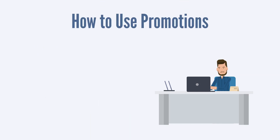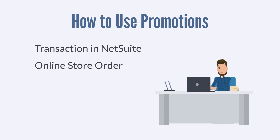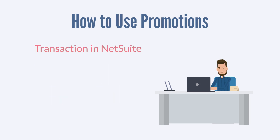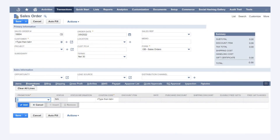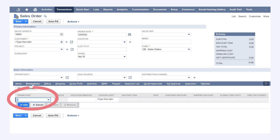Finally, let's look at how to use promotions. Promotions can be used in the following ways: on a transaction directly in NetSuite, on an online store order, and at the point of sale in SuiteCommerce In-Store, or SCIS. For the sake of our purposes, we're just going to look at using promotions on transactions directly in NetSuite. To do this, you would need to create a new sales order. Before you can add a promotion to the sales order, first you need to add both a customer and at least one item to the order. Then, under the Promotions sub-tab, you can select any promotions you wish to apply to the transaction.